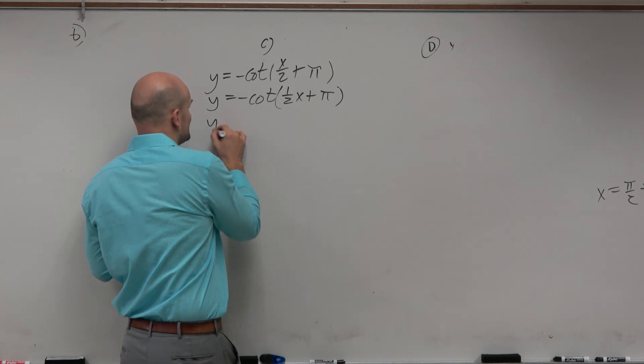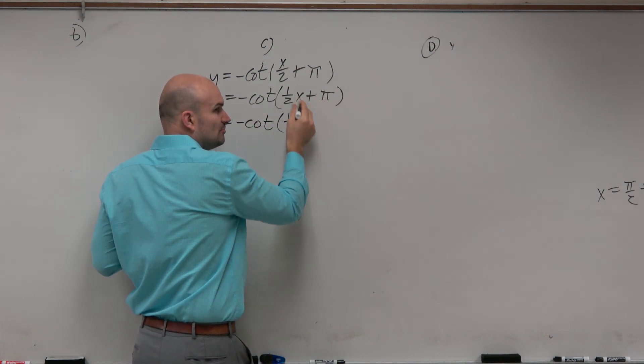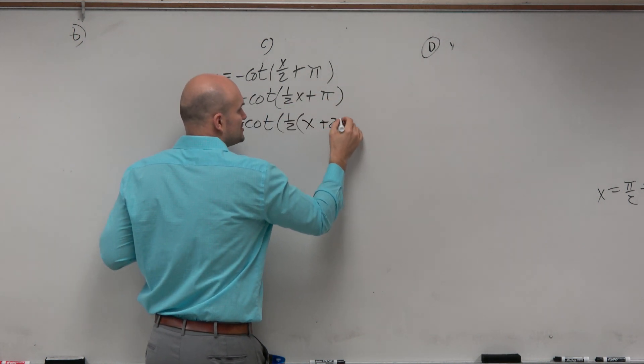So in reality, when you factor out this 1 half, it's kind of like multiplying both of these by 2. So you divide this out. That's going to give you x plus 2 pi.